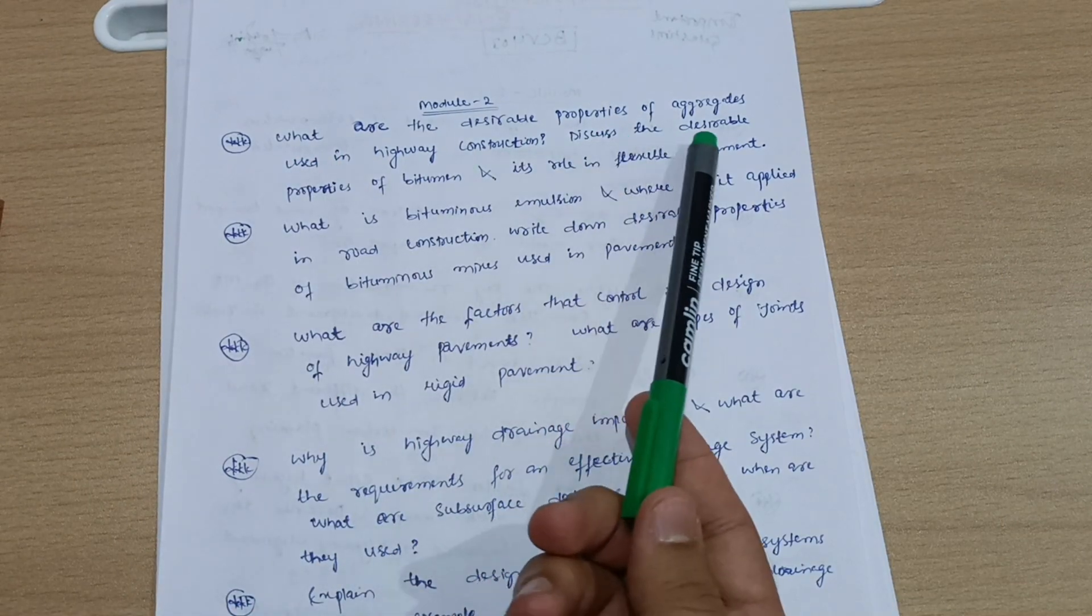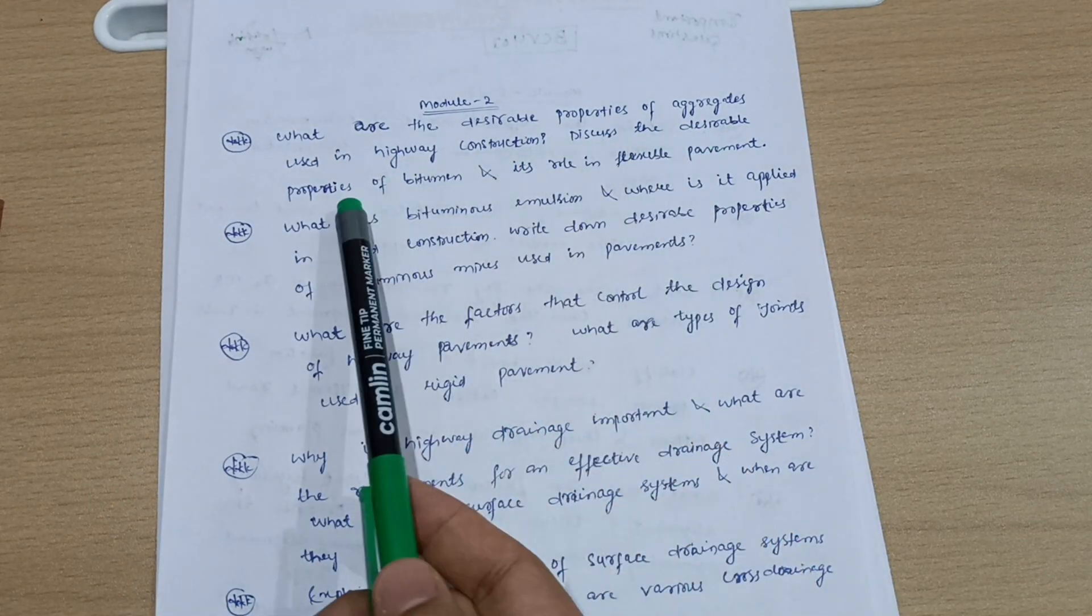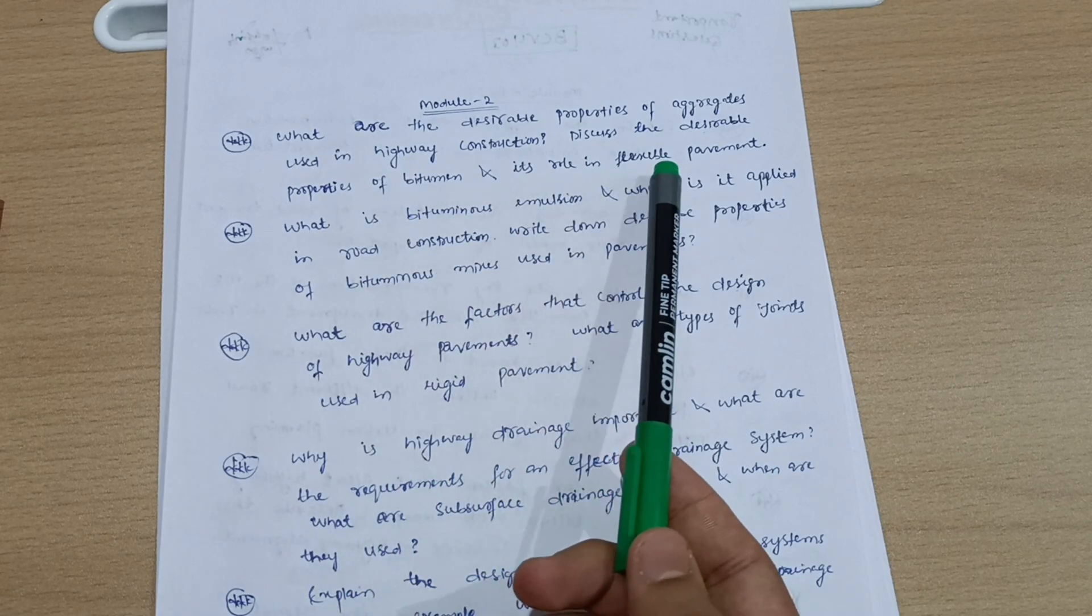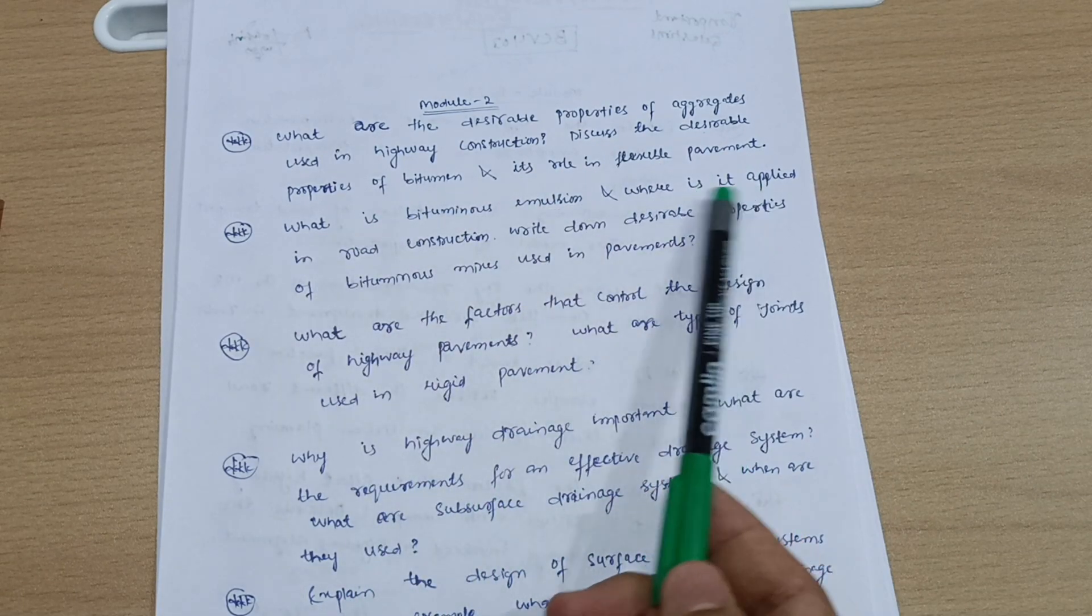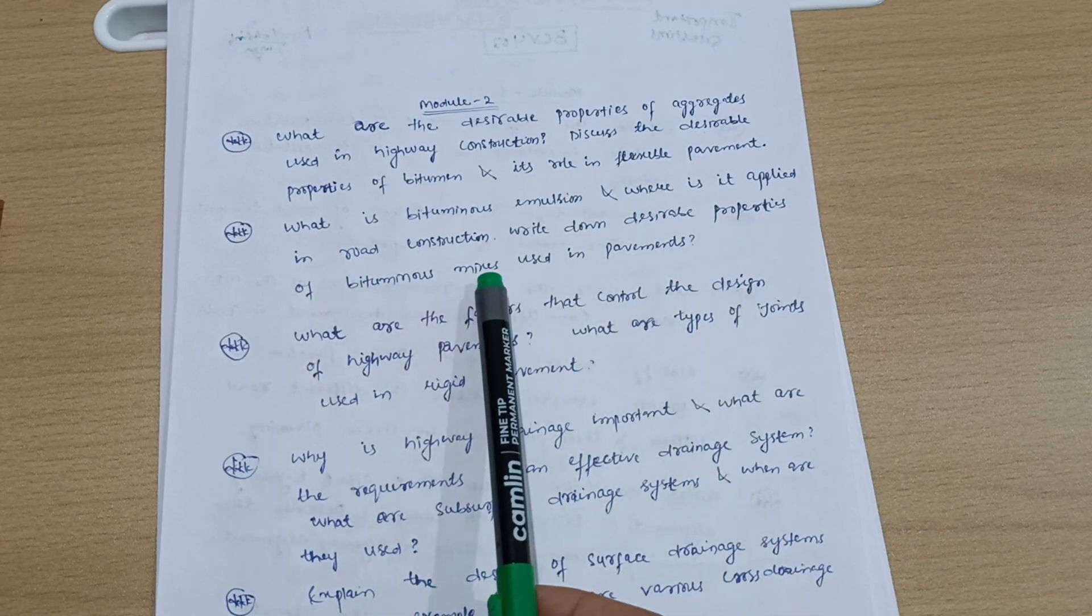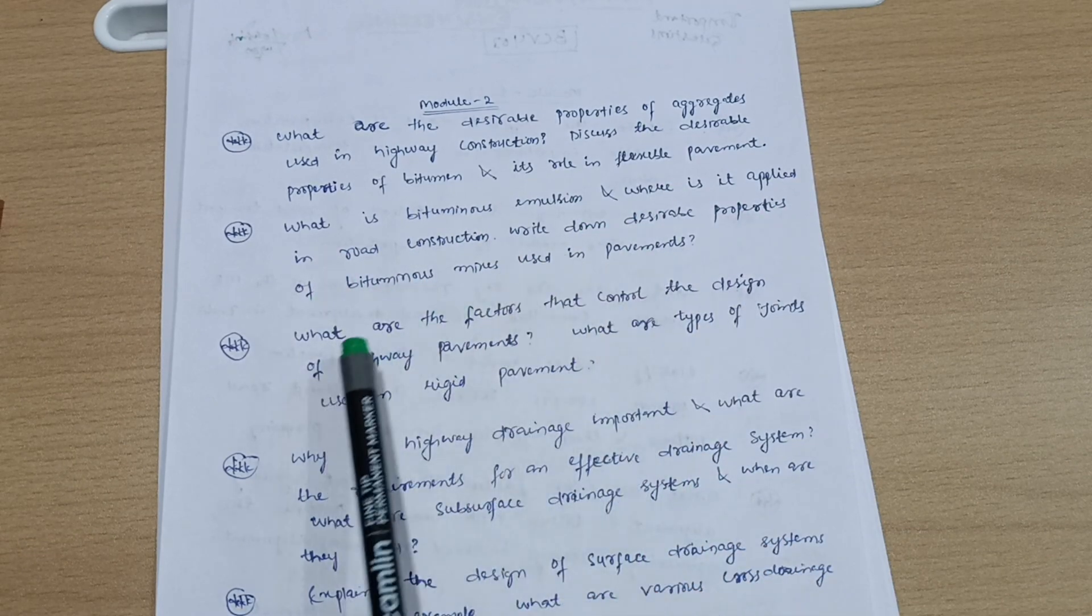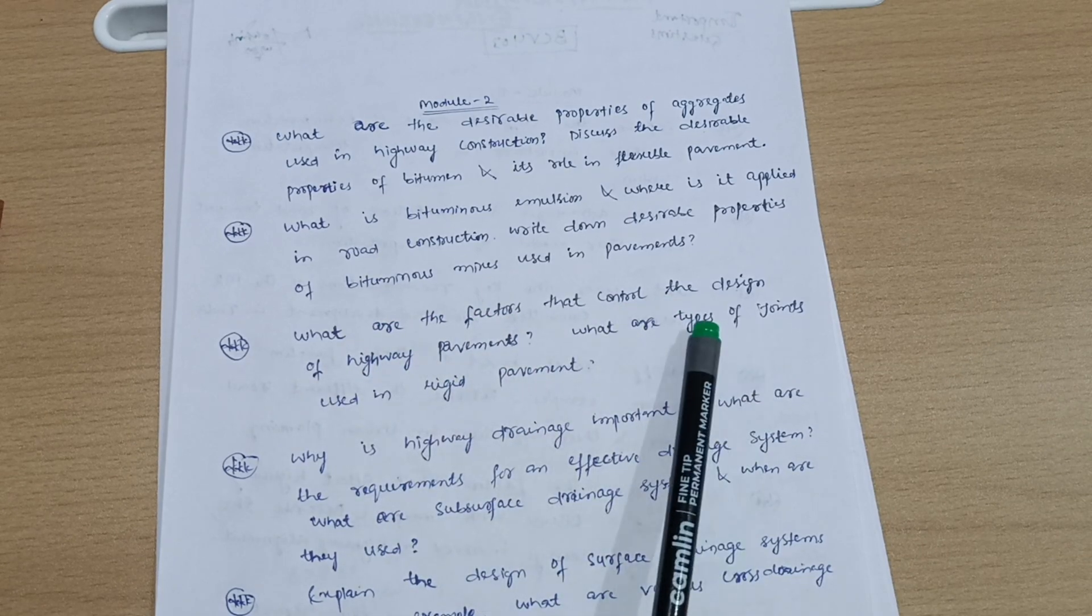Module second, we have here five questions. What are the desirable properties of aggregates used in highway construction? Discuss the desirable properties of bitumen and its role in flexible pavement. What is bituminous emulsion and why is it applied in road construction? Write down desirable properties of bituminous mixes used in pavements.